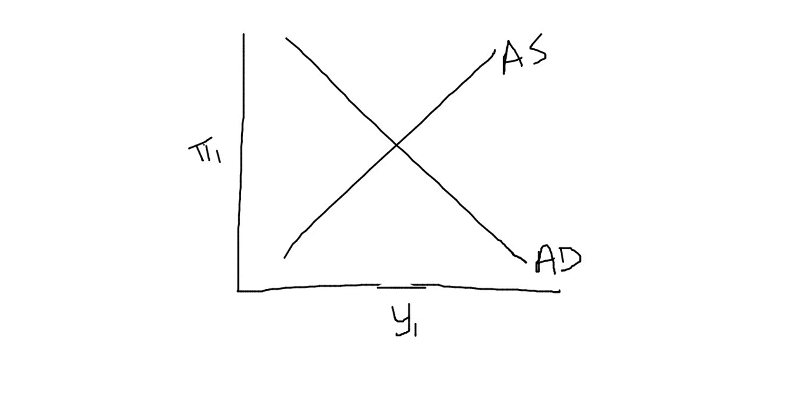Say in this case we have multiple shocks, so we have a shock to the aggregate supply so that there's some price shock perhaps, the aggregate supply curve shifts up, and we also have at the same time a shift in aggregate demand, a decrease in aggregate demand and increasing pessimism in the economy.